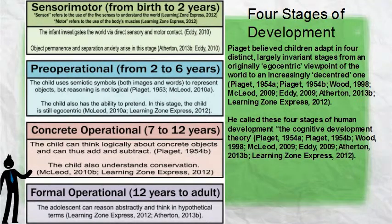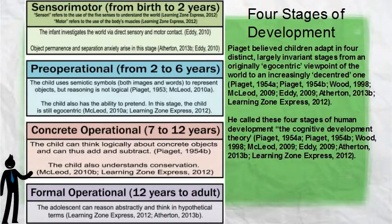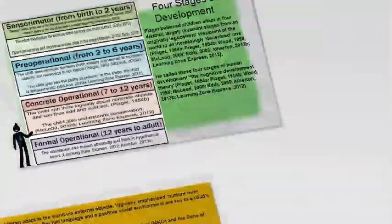He believed children adapt in four distinct, largely invariant stages, from an originally egocentric viewpoint of the world to an increasingly decentred one. He called these four stages of human development the cognitive development theory.